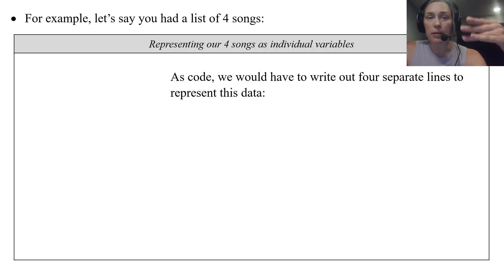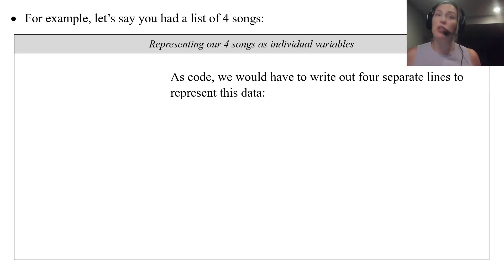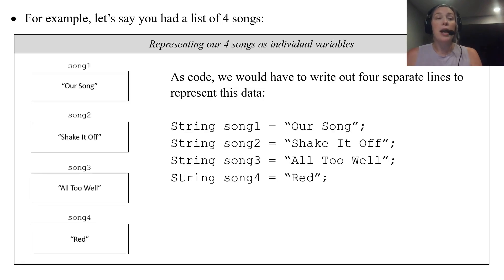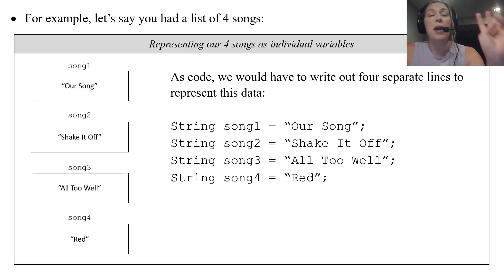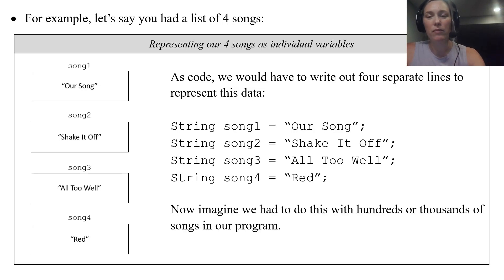Let's say you have a list of four songs. Right now we would have to make those four songs individual variables. If we just have four song titles as strings, we'd still need four individual variables. And then there's the visual representation — four individual variables for four songs. Now imagine hundreds or even thousands of songs.